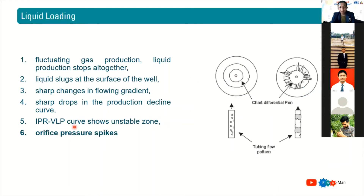Lastly, if your production is measured by an orifice meter and you see spiky readings, it means that you have liquid loading. You have slugging — slugs of liquids passing through — and that is why the reading becomes spiky.